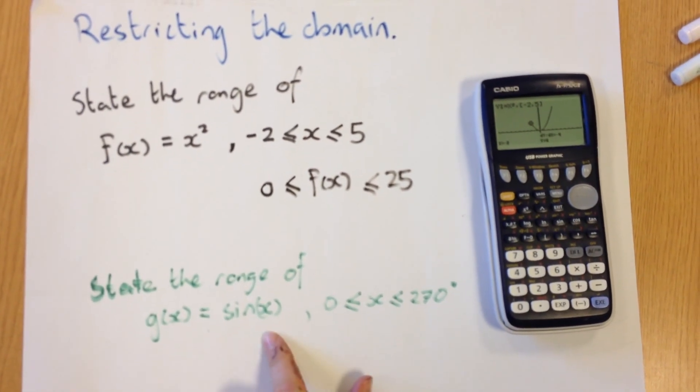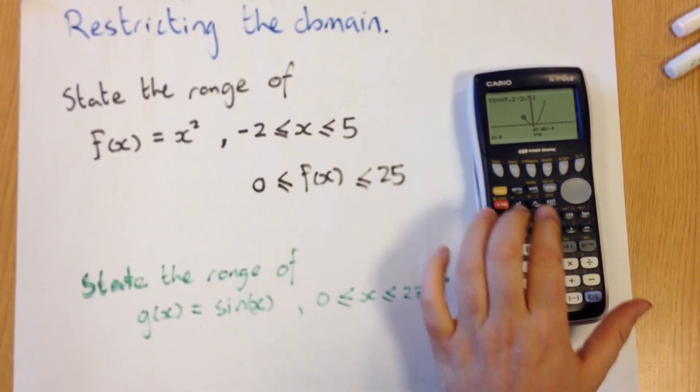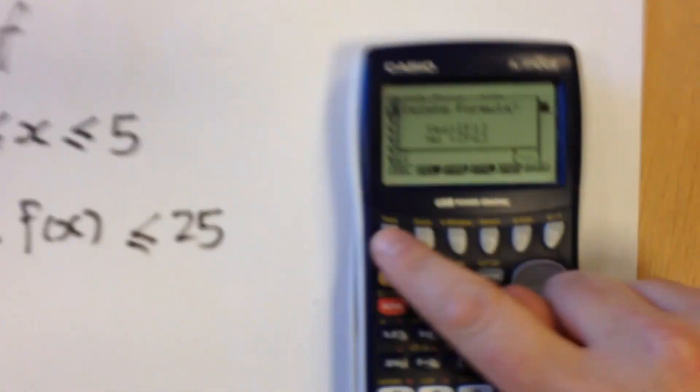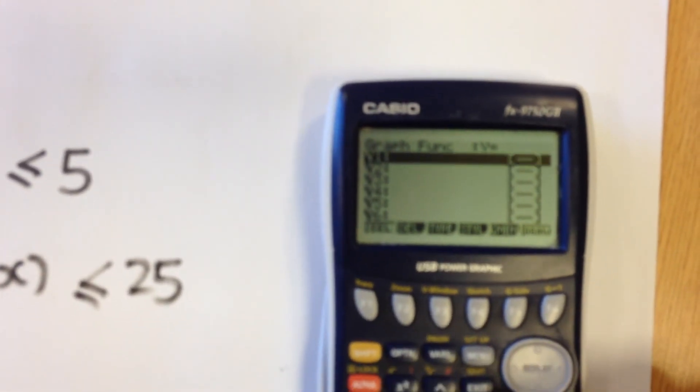It says state the range of g of x equals sine x. So we're going to do exactly the same thing. And press exit to go back in graph mode. I'm going to just go up there, delete, get rid of that one, and type in sine x.